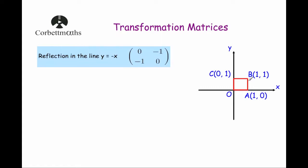So if we had this unit square O, A, B, C, and we were to reflect it with the mirror line being y equals negative x, it will reflect the unit square over here. So let's multiply each of these points by the transformation matrix and just check that this transformation matrix works.